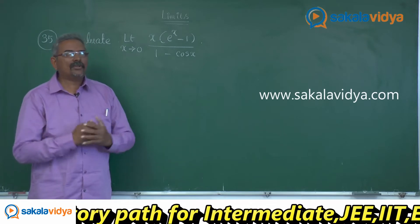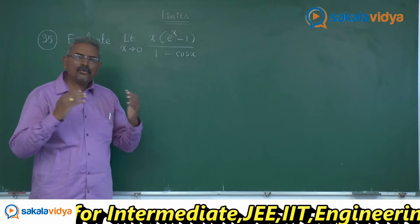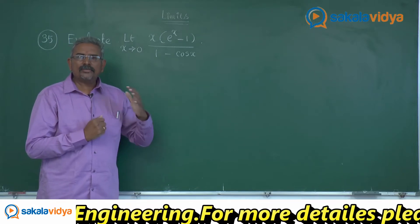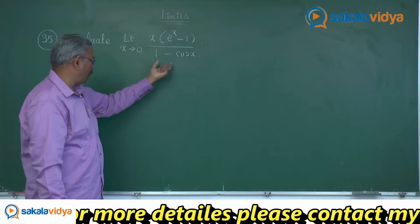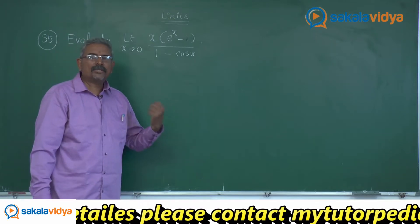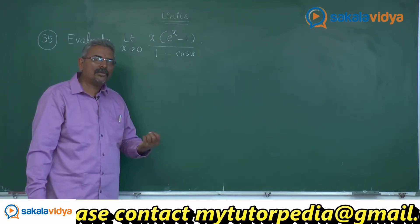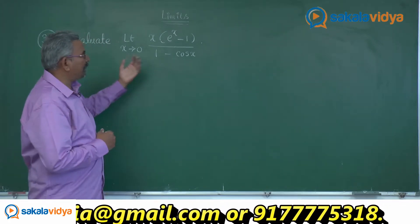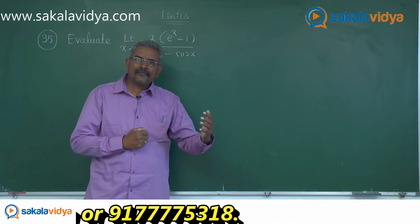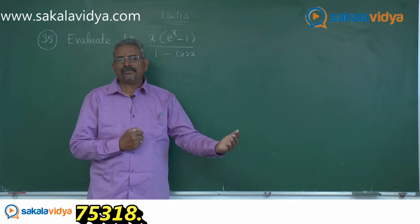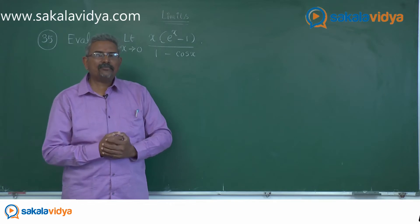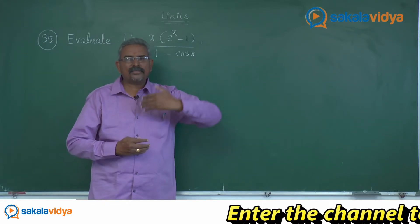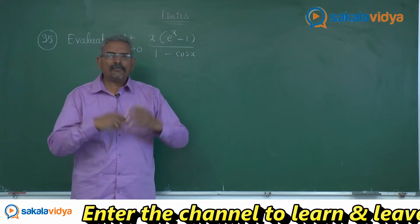Now how can we solve this problem? Here we have e power x minus 1 and 1 minus cos x. We have already encountered such types of problems in previous episodes. Whenever we have e power x minus 1 by x, as x approaches 0, we have 1. In a similar pattern we have done: evaluate limit x tends to 0, 1 minus cos x by x square. Such problems we have already done.